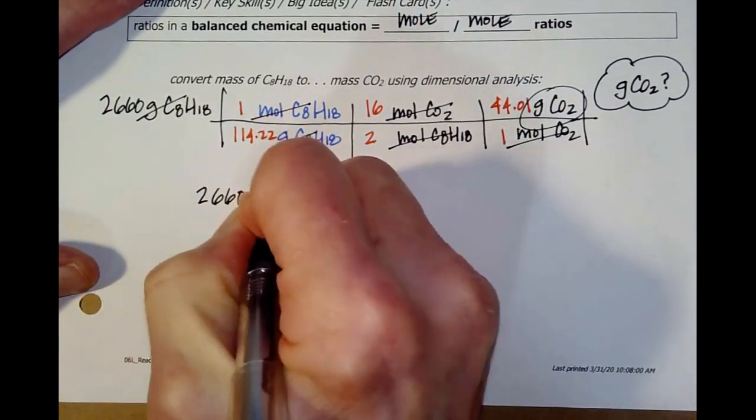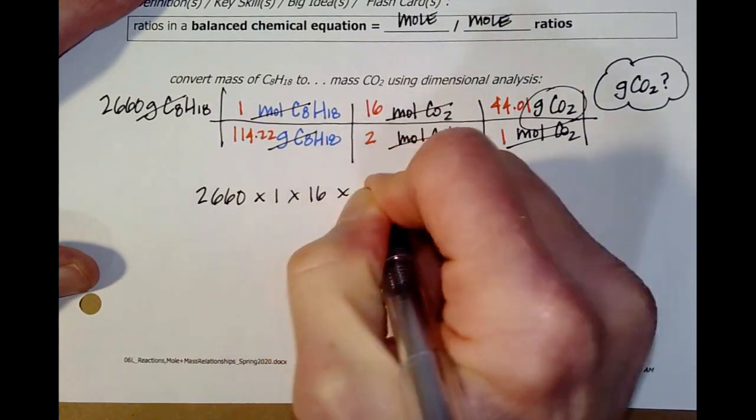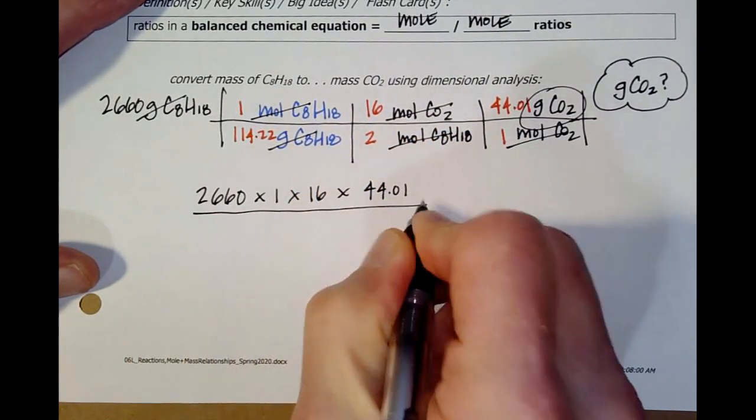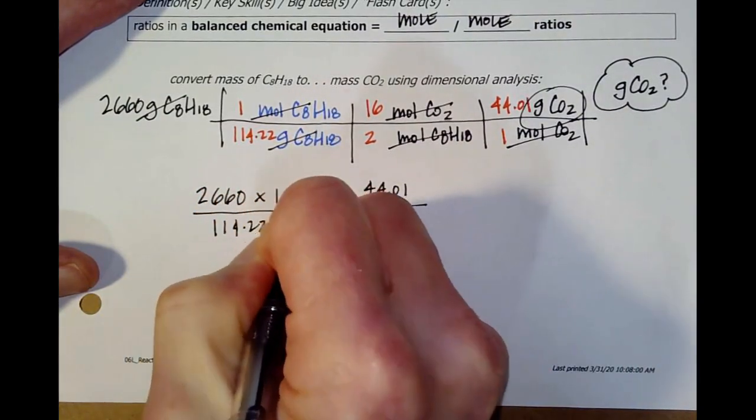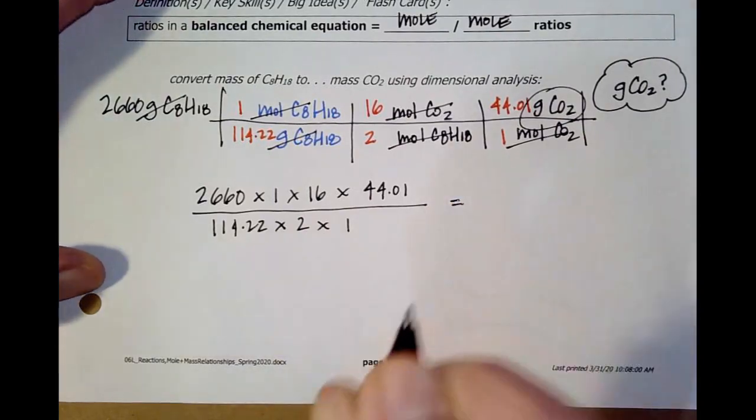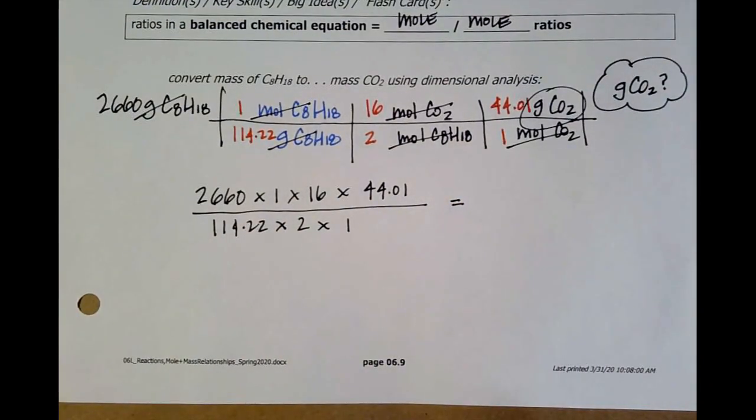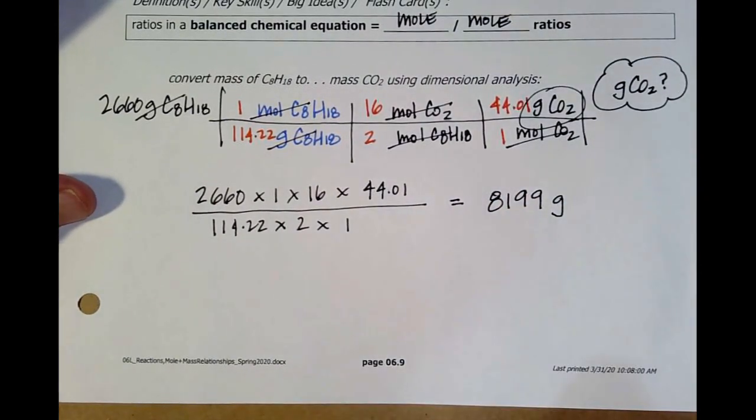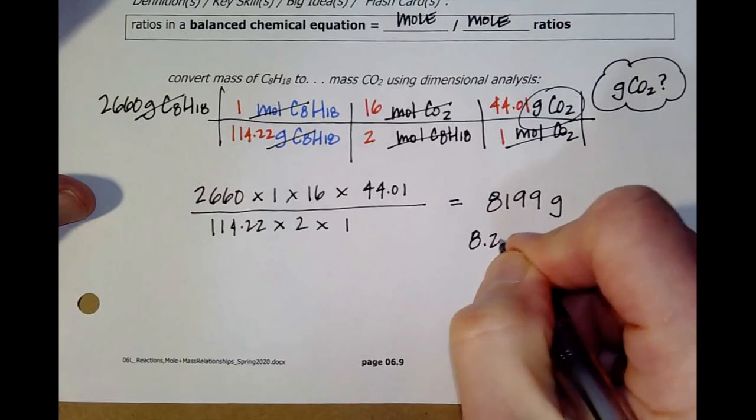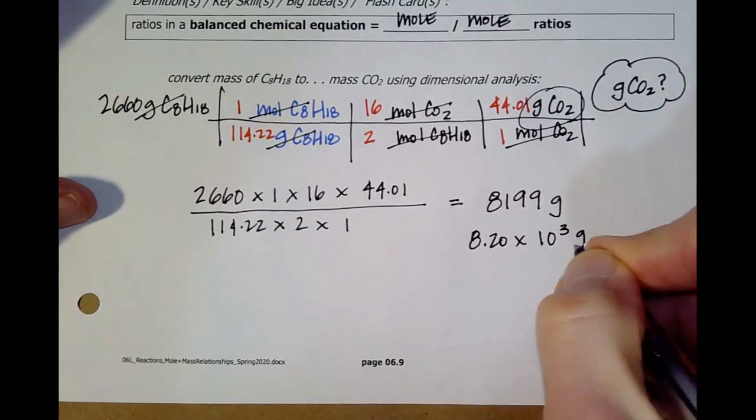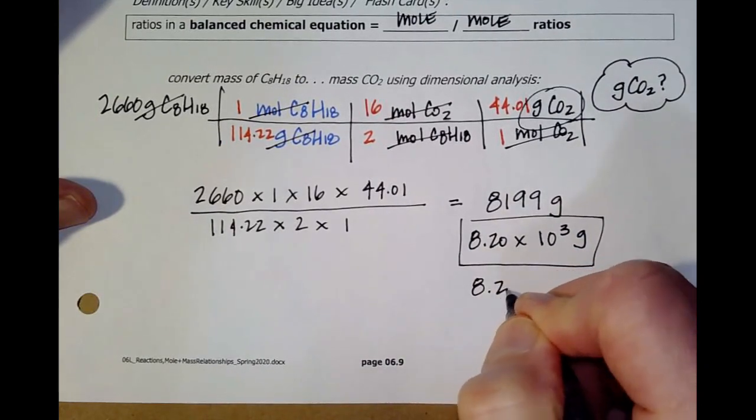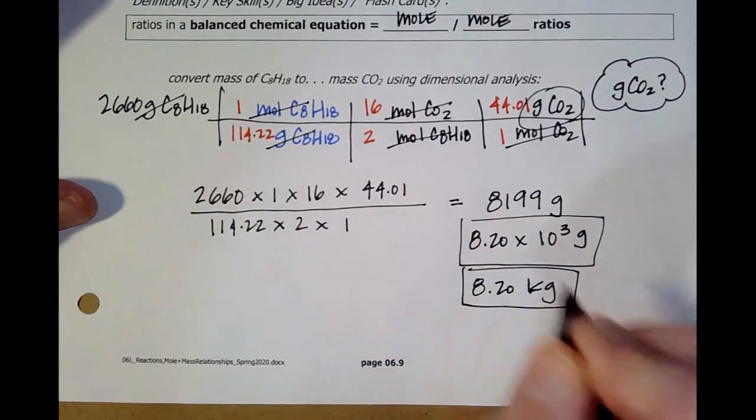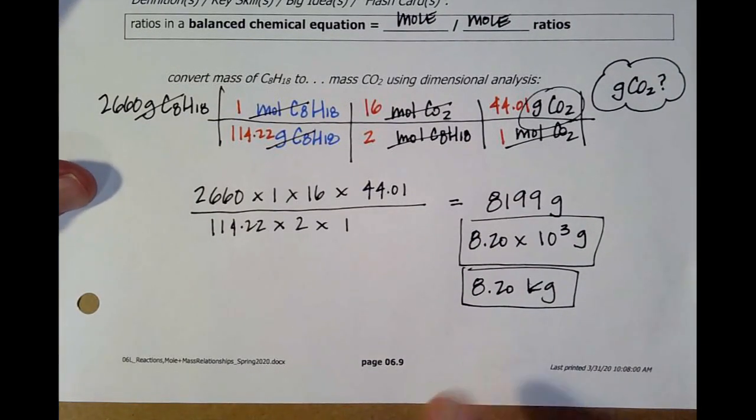So, I'm at 2660 times 1 times 16 times 44.01 divided by 114.22 times 2 times 1. And I get, oh, I have a number. I'm going to pause and get the number. Okay, that gives me 8199 grams. Now, that's four sig figs. We had three sig figs. Maybe we could do 8.20 times 10 to the third grams, 8.20 kilograms. There's three sig figs. That's about 20 pounds. So, think about that.